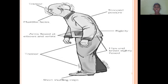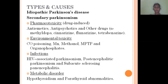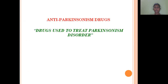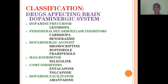This is the symptoms shown in the image of an age-old person. The types and causes of Parkinsonism may be idiopathic or secondary, due to drug-induced causes, environmental toxicity, infarction, or metabolic disorder. The drugs used to treat Parkinsonism disorder are called antiparkinsonism drugs.